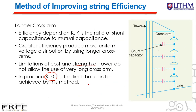The method for improving string efficiency: first, use longer cross arms. String efficiency depends on K, where K = C1/C (ratio of shunt capacitance to mutual capacitance). Greater efficiency produces more uniform voltage distribution. Using longer cross arms reduces the shunt capacitance. However, the strength of the tower limits the use of very long cross arms. In practice, K = 0.1 is the limit achievable by this method.